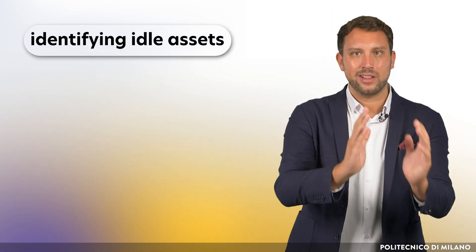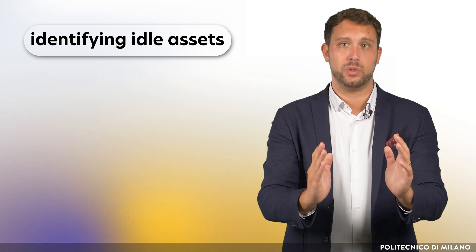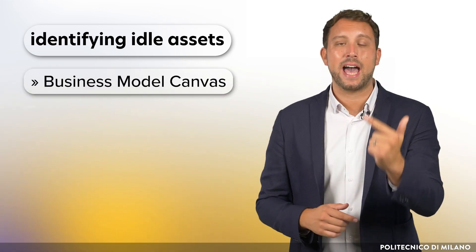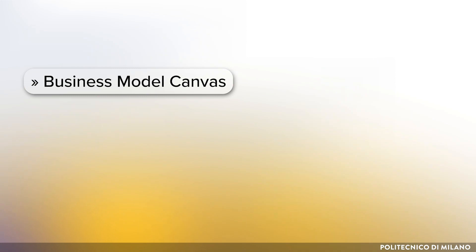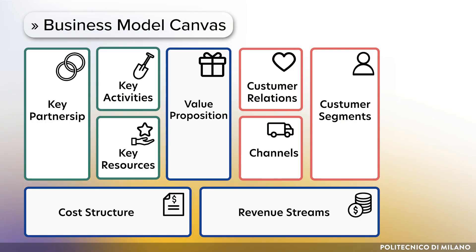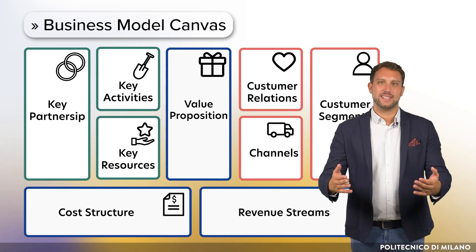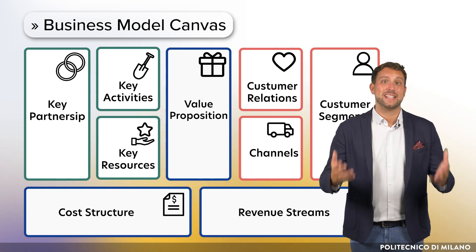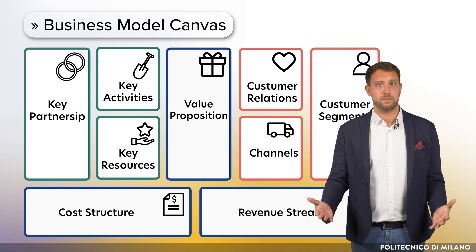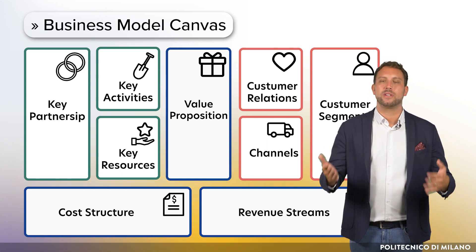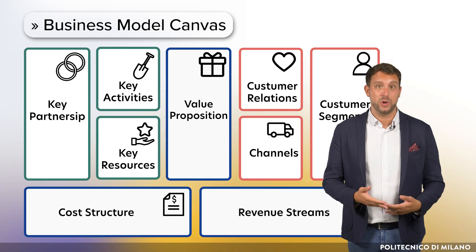Why not do the same thing within an established organization? Identifying idle assets is done through two tools: the business model canvas and the idle asset canvas. The business model canvas is used to set a baseline and identify the main elements related to the creation and capture of value in your organization. This step might seem trivial, but it serves to take a step back from the most obvious perspective and strive for a 360-degree view on the organization.